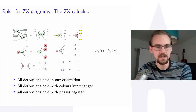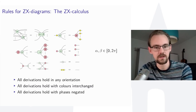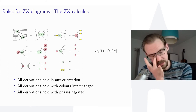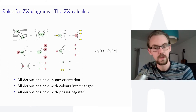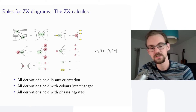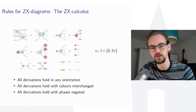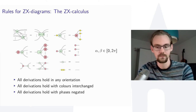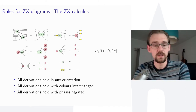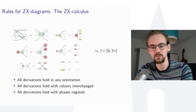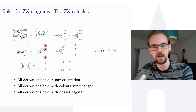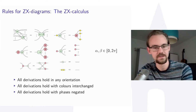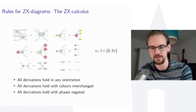To summarize the rewrite rules: they hold in any orientation, they hold with colors interchanged, and they hold with phases negated (meaning we take the conjugate of the linear maps). This set of rewrite rules is quite powerful, though it does not prove everything about linear maps — some additional rules exist, detailed in the referenced paper.